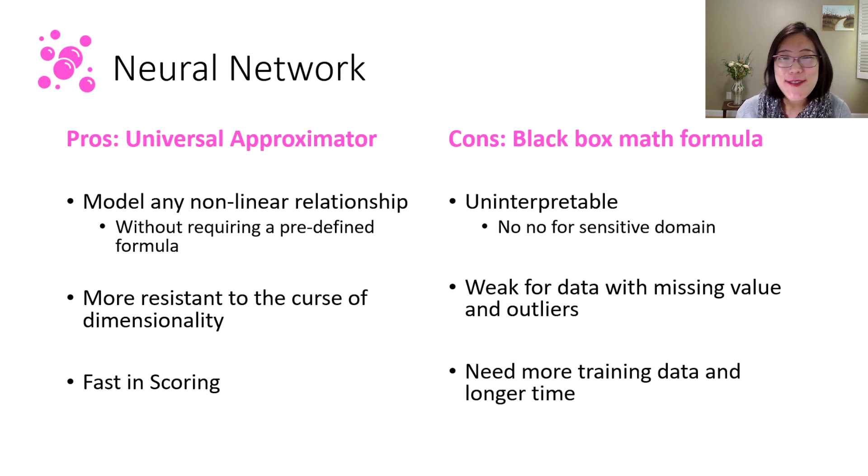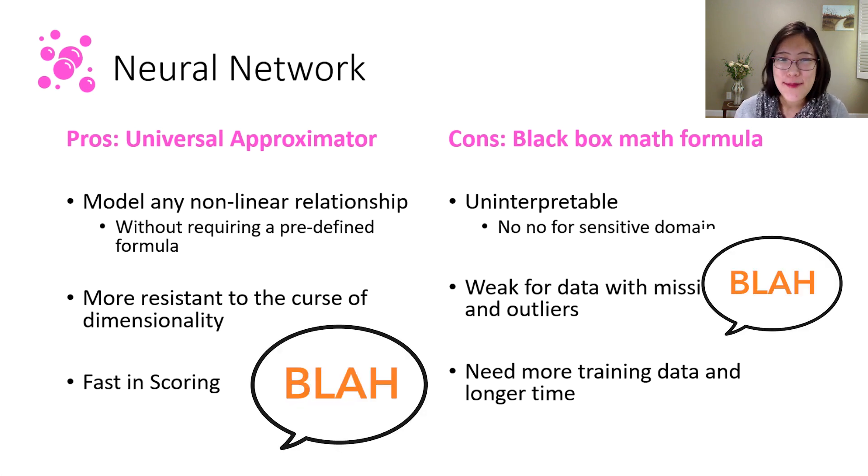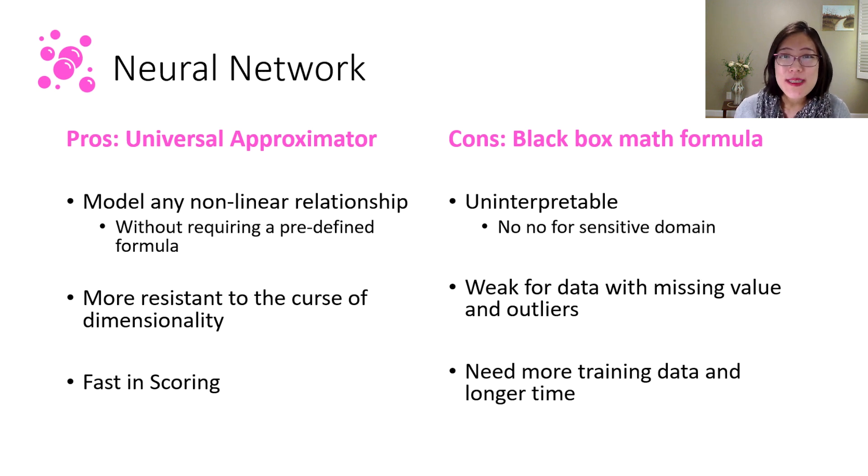And what's better is you don't need to specify a formula, say y equals to something x or x cubed and blah blah blah. You can just use this neural network to model any relationship without a predefined formula. It's also more resistant to the curse of dimensionality, and once this model is learned, it's really fast to apply it to new data because it's just a very long math model. So it's fast in scoring as well.